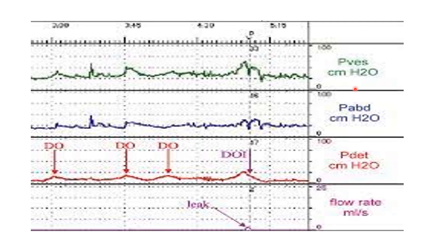In this next graph, looking at vesical and abdominal pressure, there is no significant rise in either. But the detrusor pressure line shows a slight rise during the filling phase. Simultaneously, there is leakage of urine. This is urge incontinence due to detrusor overactivity. Whenever you look at a urodynamic graph showing detrusor overactivity, you will always find a raised detrusor pressure, and simultaneously there will be a leak.